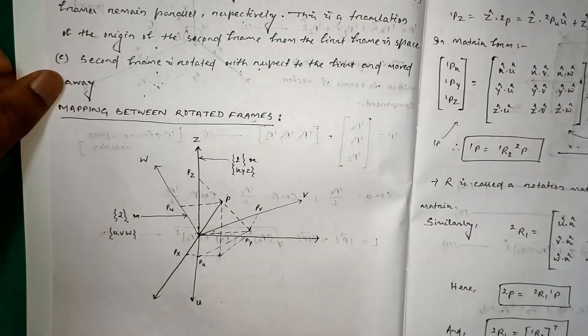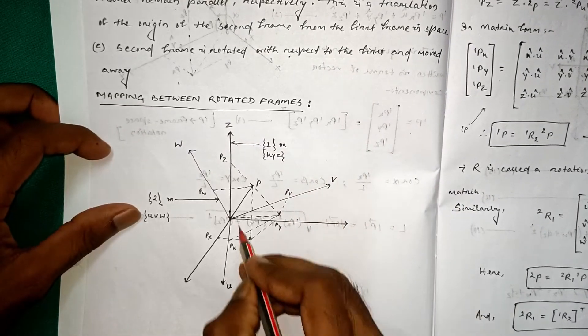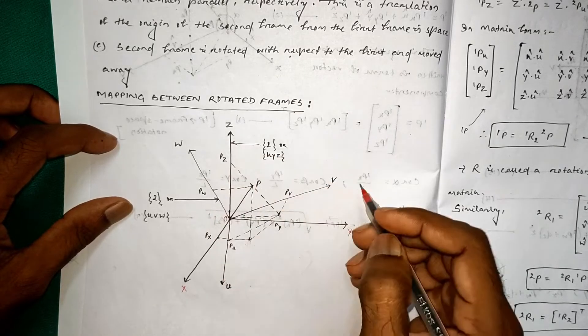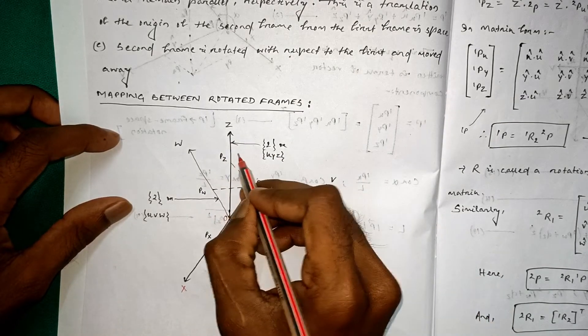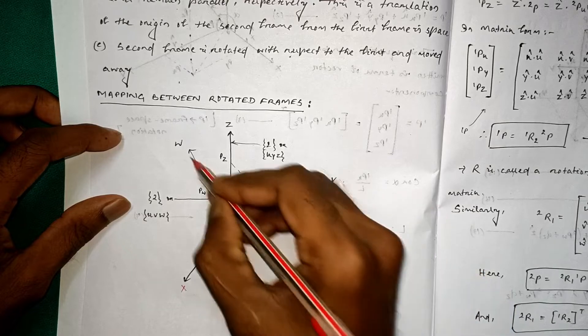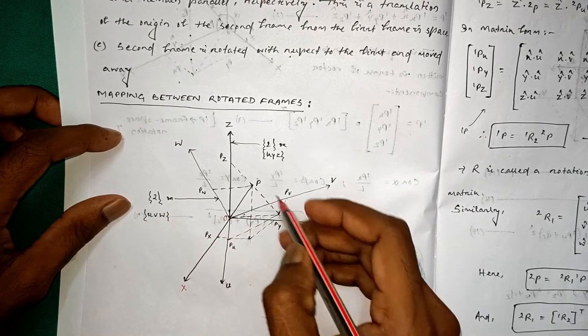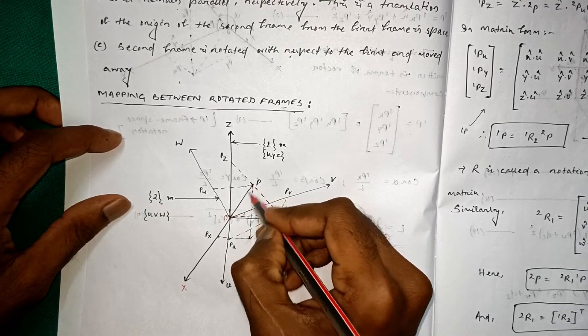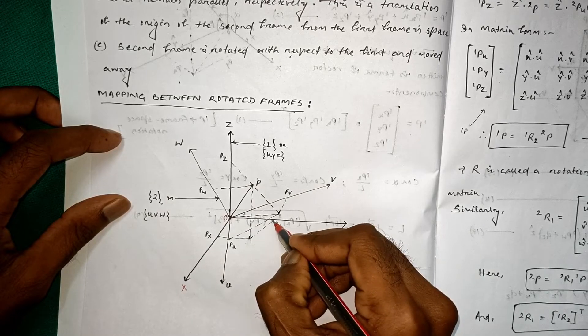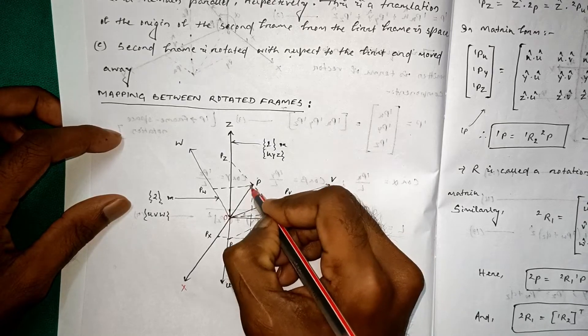Now we will see the first, that is rotation mapping between rotated frames. So here the origin is named as O and this is X, this is Y and this is Z. Let this XYZ be frame 1 or XYZ plane and another frame is U, V and W. After rotation we will get this one and let this one be frame 2 or U, V, W. So this is the point we have taken and this is OP. So here from this point this is PX, this is PY and this is PZ from P, and from this point this is PU, this is PV and this is PW.